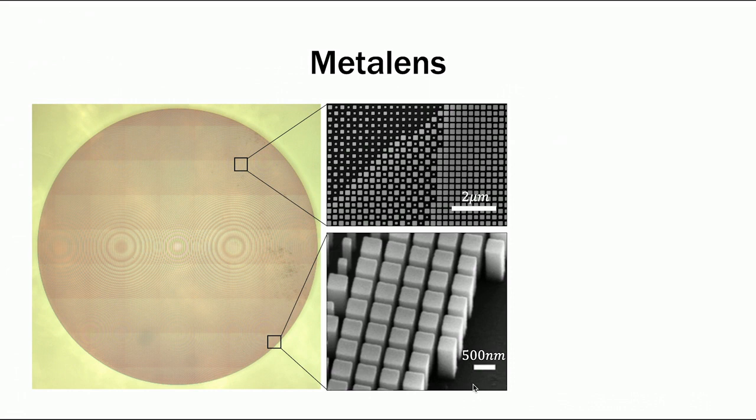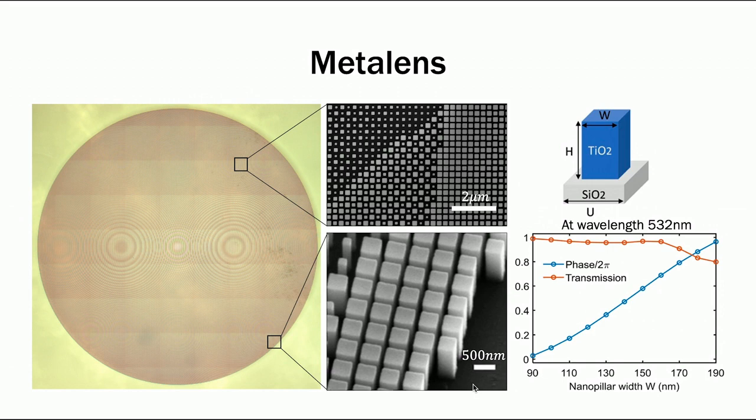In this example, the nanostructures are cuboids, and as the width of the cuboid changes, the extra phase it adds to the wave is changing almost linearly. By properly arranging these nanostructures, the device can work as a focusing lens for a single wavelength, and a lot more.